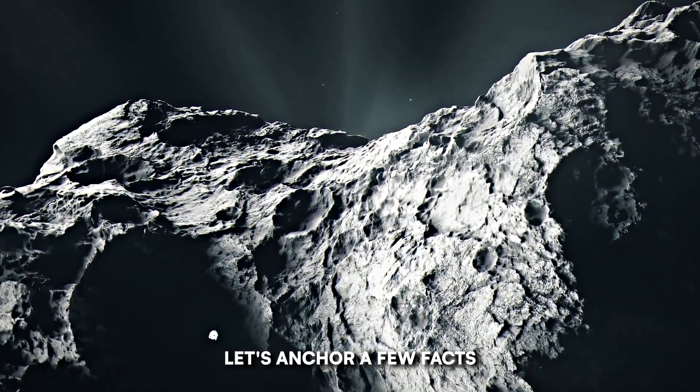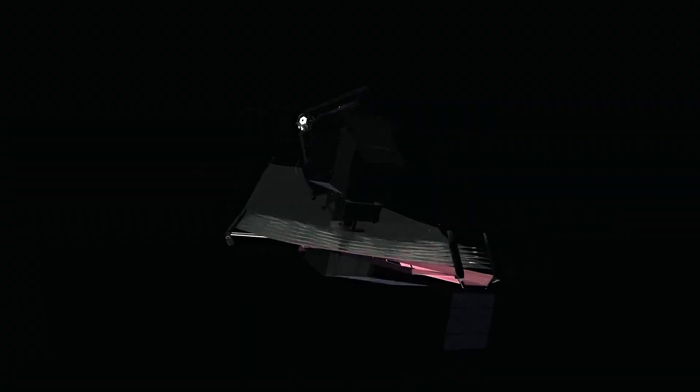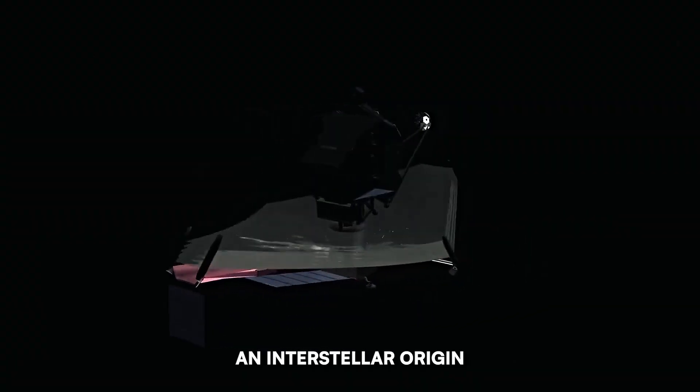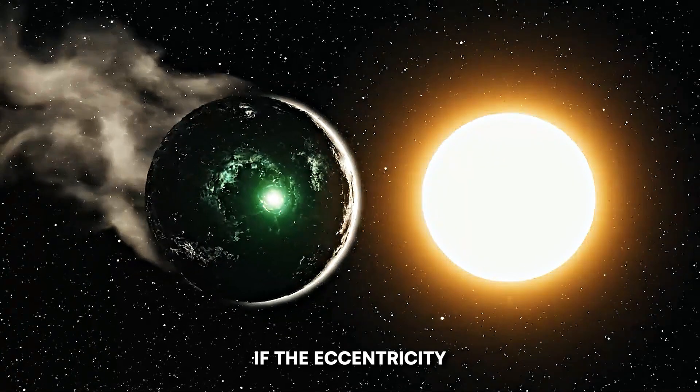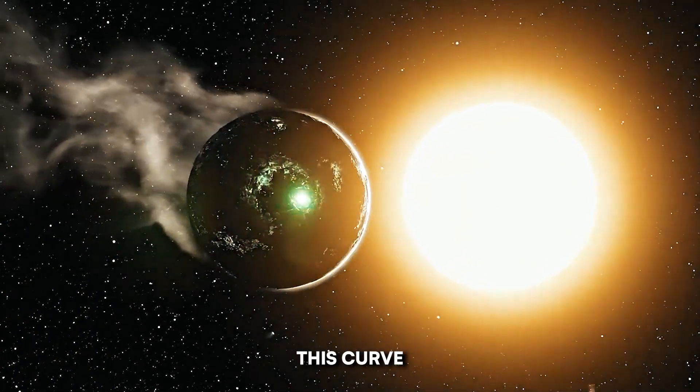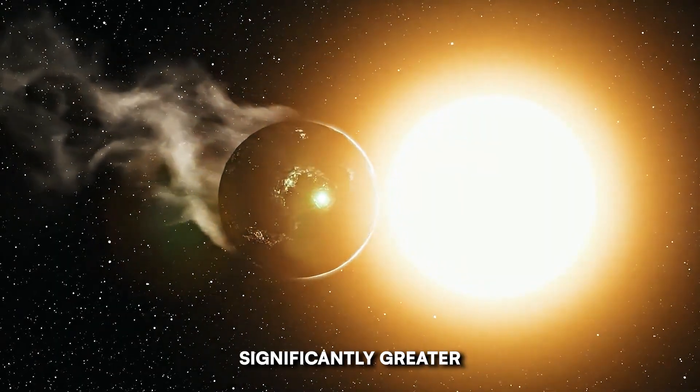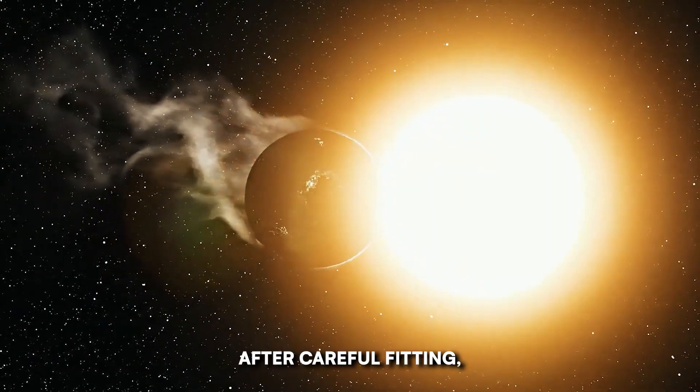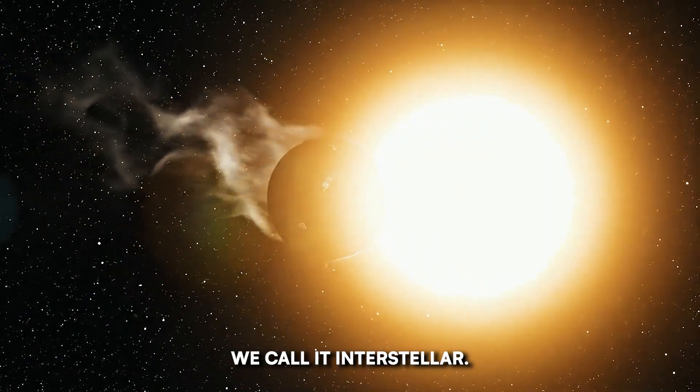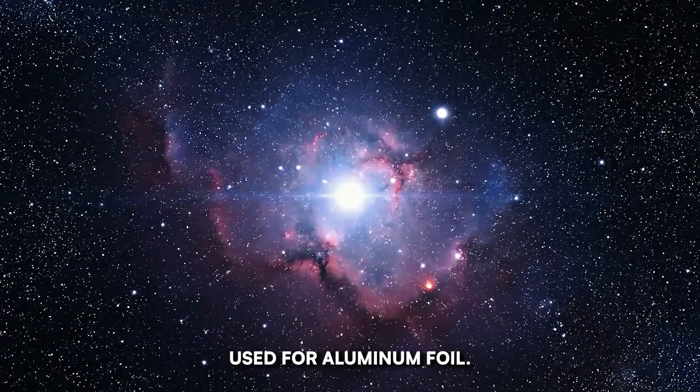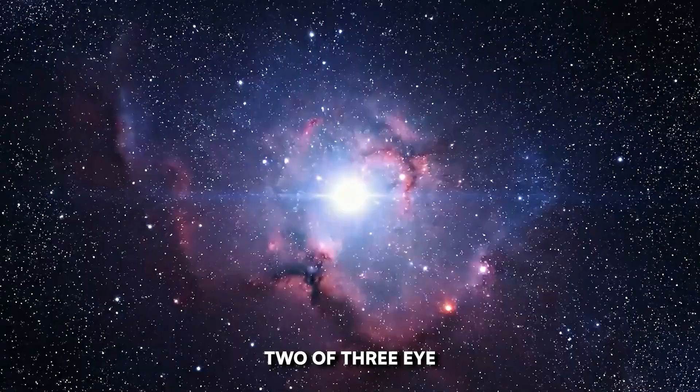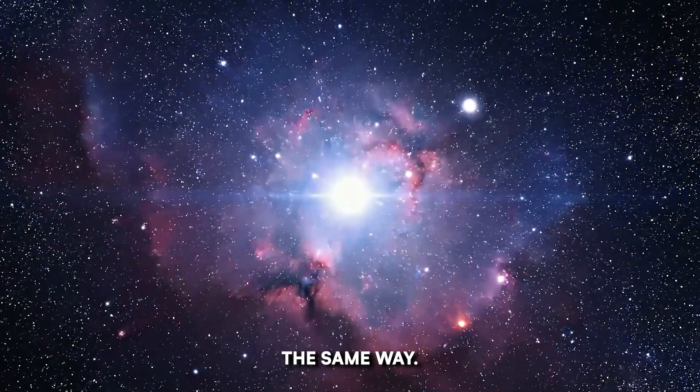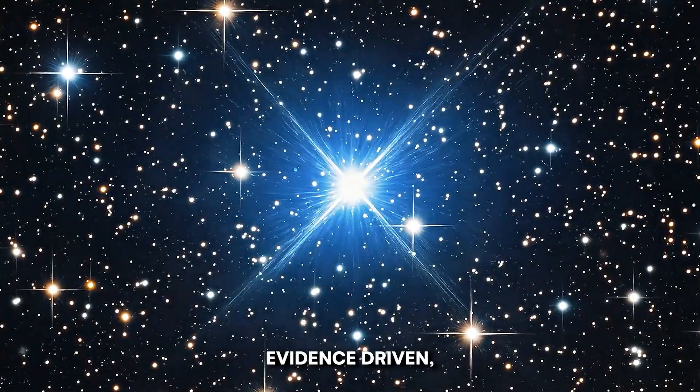Let's anchor a few facts so your viewers know what they can trust. First, an interstellar origin is determined by speed and shape of the path. If the eccentricity, the how open is this curve number, is significantly greater than one after careful fitting, we call it interstellar. That is the criterion used for Oumuamua 1i and Borisov 2i. 3i Atlas is being treated the same way, evidence-driven, not hype-driven.